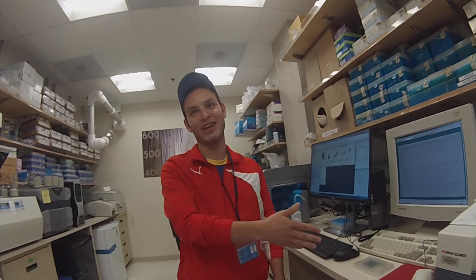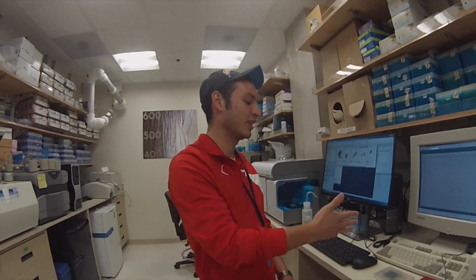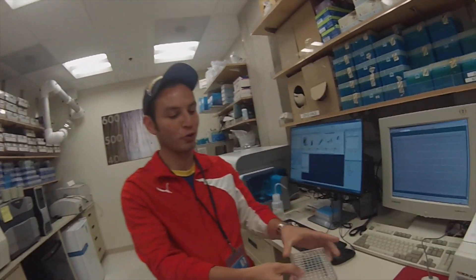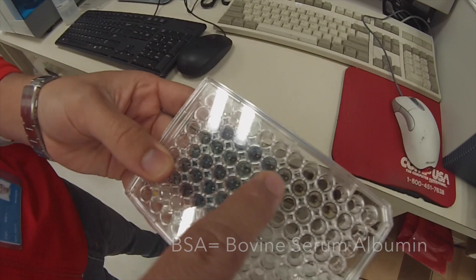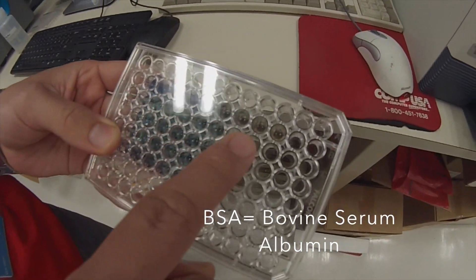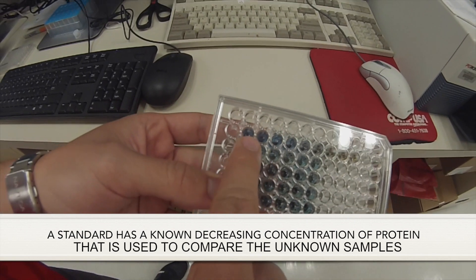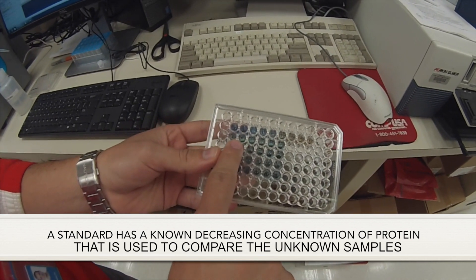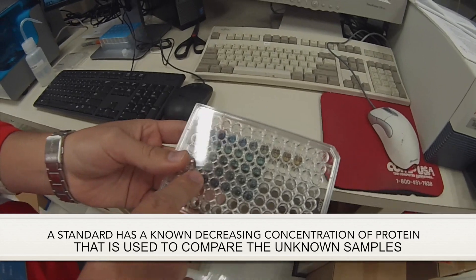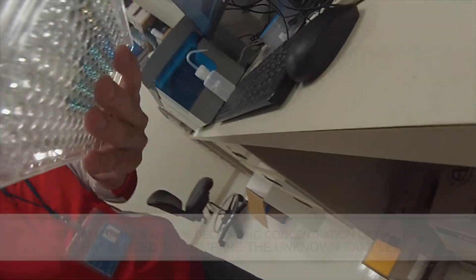Right now we're at the plate reader and we're going to compare a standard dilution of BSA in this row. We want to compare that because this is an already known quantity of protein and we want to see how much protein we have in our samples. That's why we're using the plate reader.